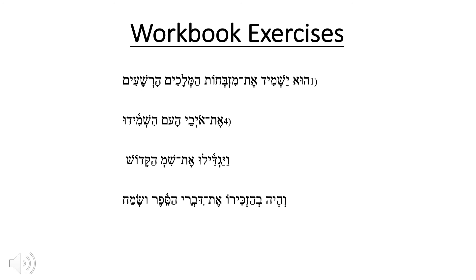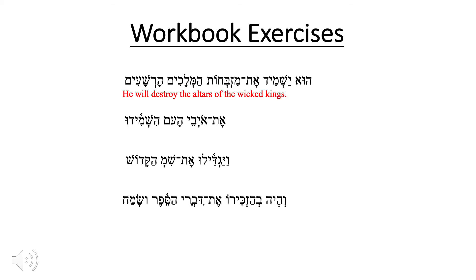This next set of exercises is translation. Go ahead and translate number one. Number one begins with a pronoun with a subject fronted for emphasis — 'he.' This is followed by yashmid, and you'll notice the patah under the yod, which is a dead giveaway that this is a Hiphil, so 'he will destroy.' Normally we think of the Hiphil as causative, but in this particular stem it simply means 'destroy,' followed by the direct object marker and the plural mitzbachot, 'the altars.'